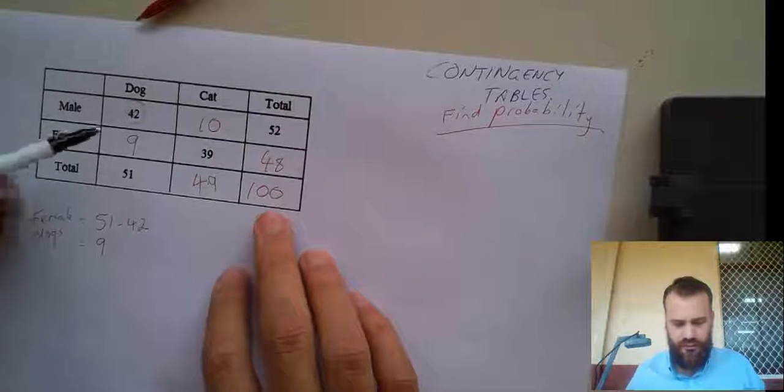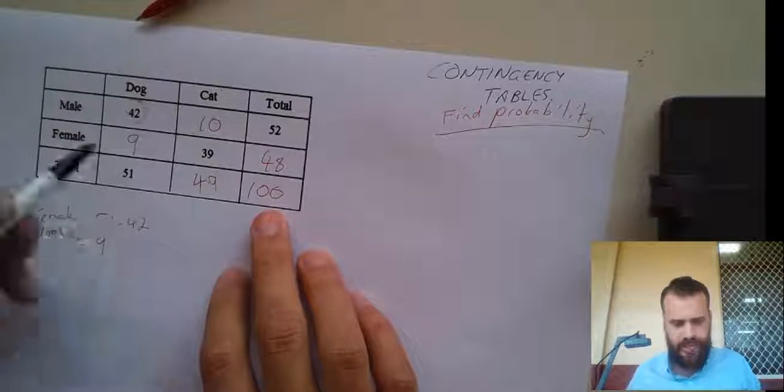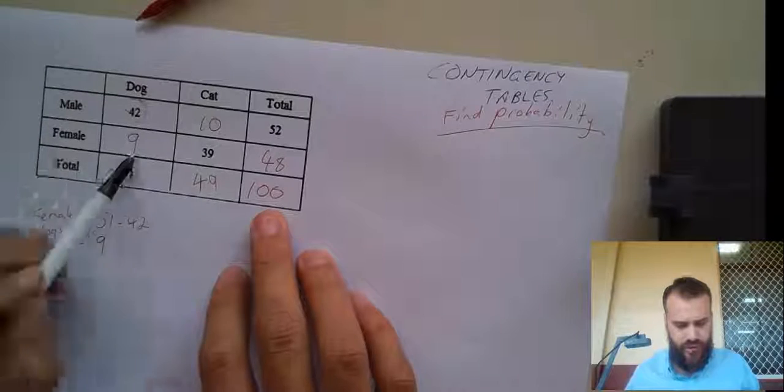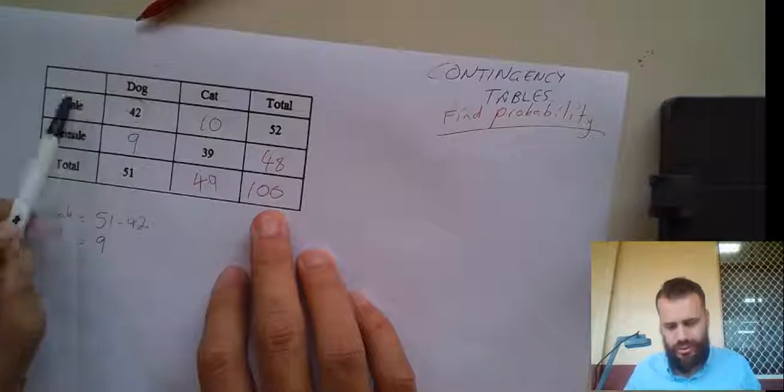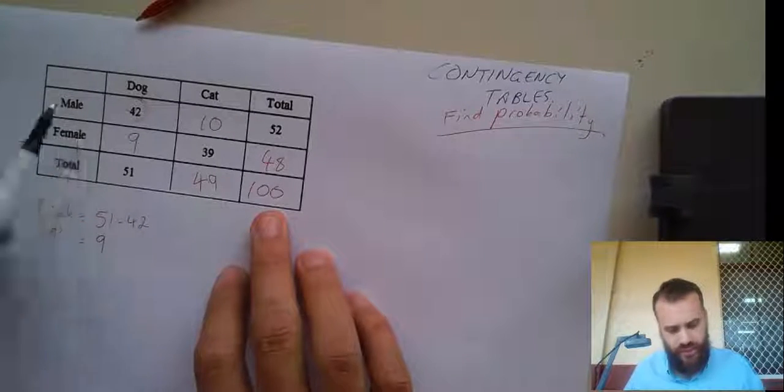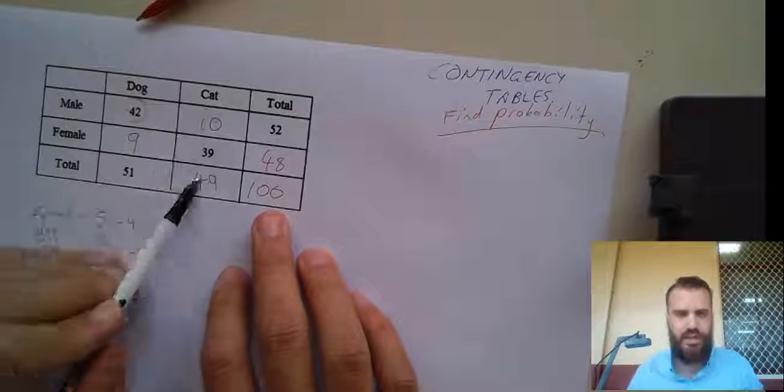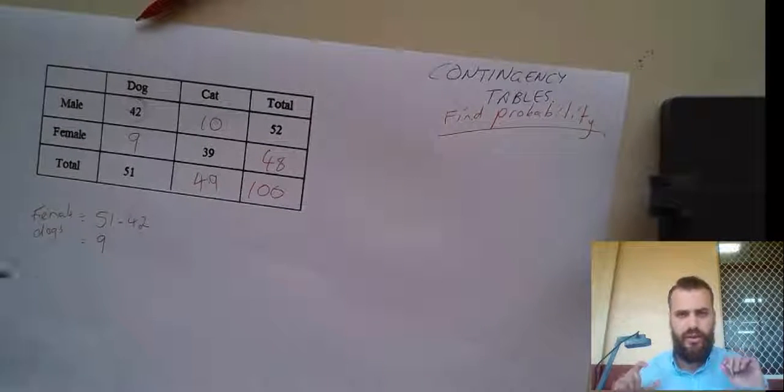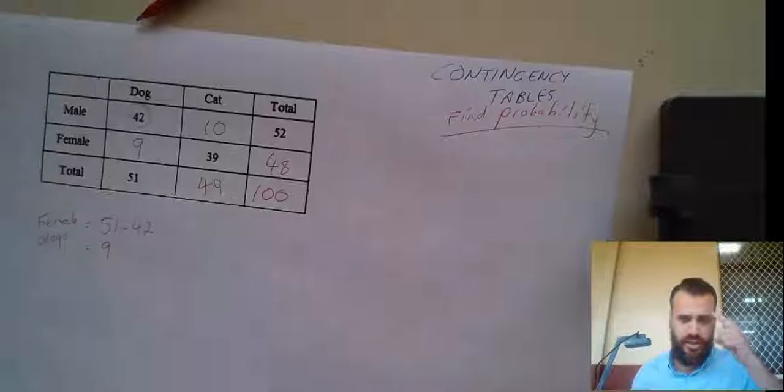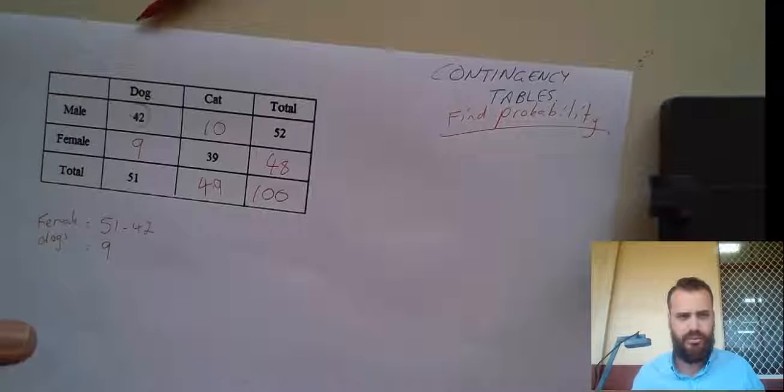So, for instance, there's 42 male dogs, there's 10 male cats, there's 9 female dogs, there's 39 female cats. There's 52 males in total, there's 48 females in total, there's 51 dogs and there's 49 cats. And all together, that makes 100 animals. That's what it means. Try to get the picture in your head before you start up what we're talking about.